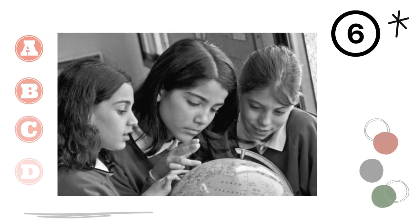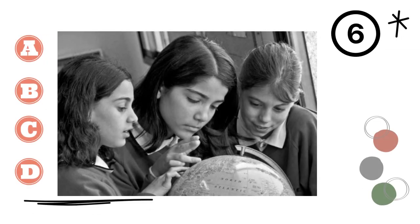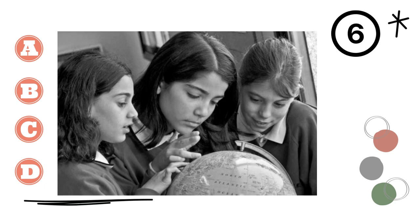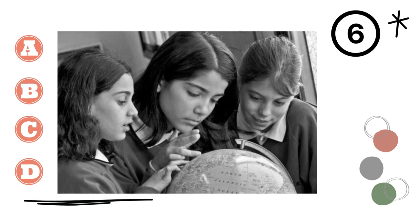6. A. They're studying a chart. B. They're looking at the moon. C. They're looking at a globe. D. They're marking a map.